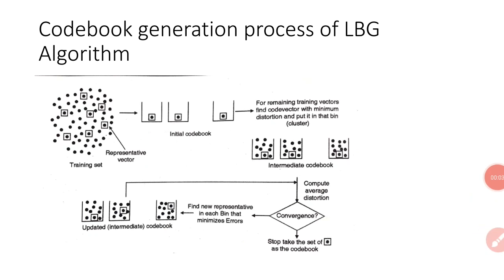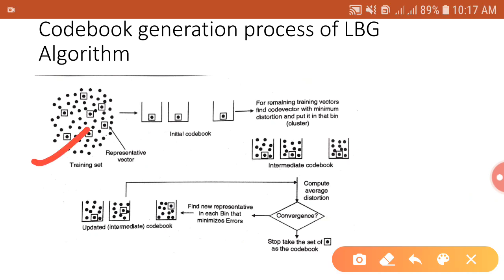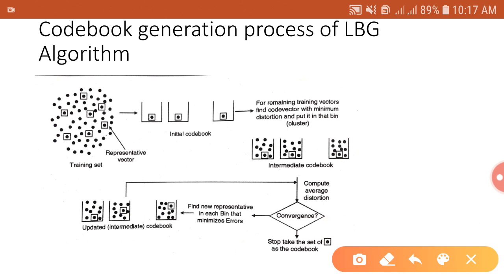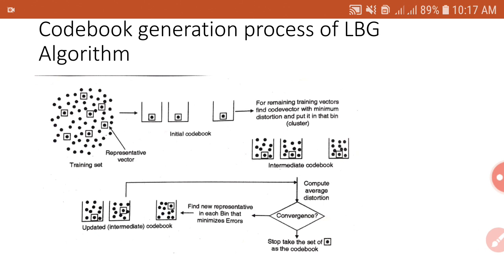In this video, I will explain the LBG algorithm by taking one example. The first step in the LBG algorithm is to choose an initial set of code vectors or representative vectors for the training vectors. There is a large set of training vectors and you have to choose the representative vectors for them. The second step is to divide training vectors into groups or clusters using the minimum distortion condition — find the closest code vector for each training vector and put that training vector in a group or cluster.